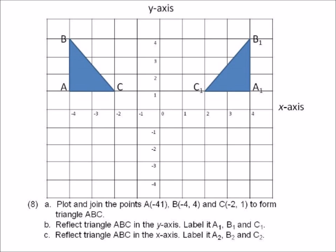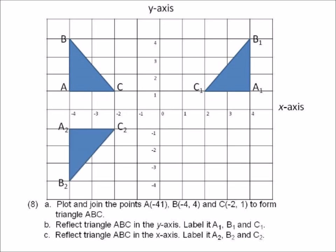Now reflect the original triangle ABC in the x-axis. Find the x-axis and draw triangle ABC on the other side of it. There you have the reflection of triangle ABC in the x-axis. Label the points A2, B2, C2 — A2 corresponds to A, B2 to B, and C2 to C. The x-axis is halfway between those two triangles.